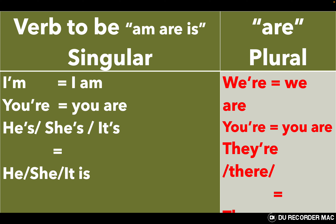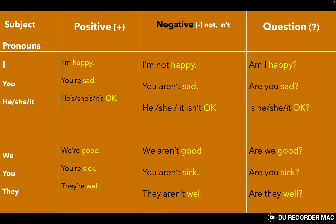The verb 'to be' is very important in English because it is used in many many sentences. It is the most used word — or verb — in English. Now we are going to have subject pronouns: I, you, he, she, it.